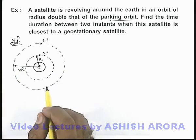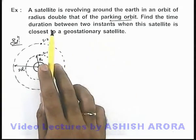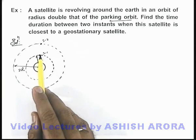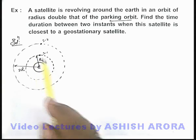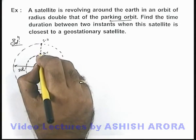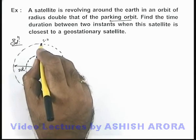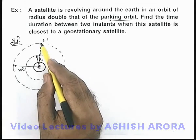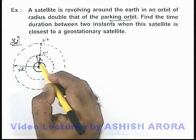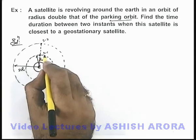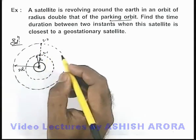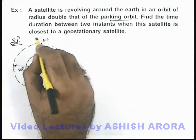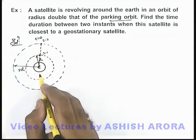We are required to find the time duration between the 2 instants when satellite 2 is closest to the geostationary satellite. Consider the situation when both satellites are along the same radial line. We know that the satellite closer to the planet will move faster, so satellite 1 (geostationary) moves faster than satellite 2. At time t = 0, both are in the same radial line.